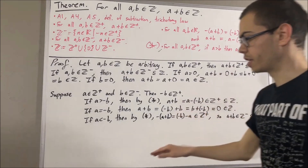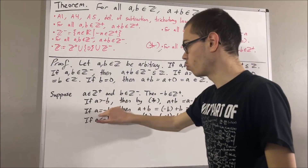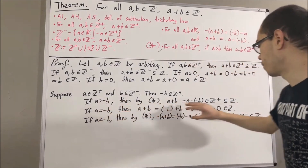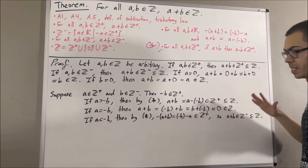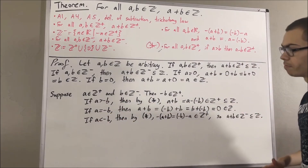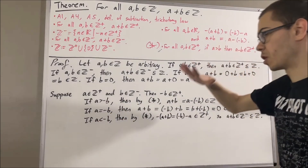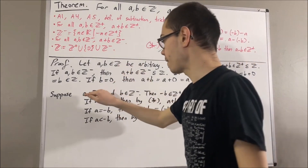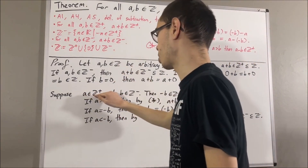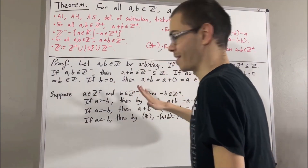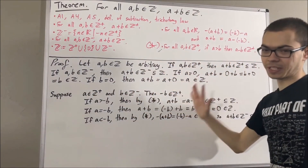So in all three sub-cases it follows that a plus b is an integer. Therefore, we have shown that if a is a positive integer and b is a negative integer, then a plus b is an integer.